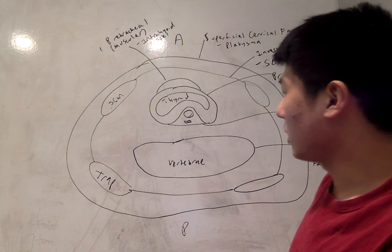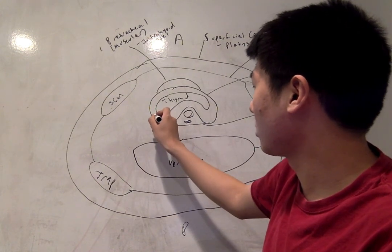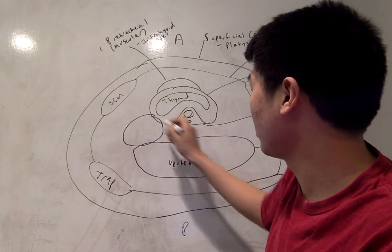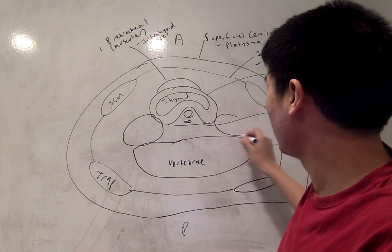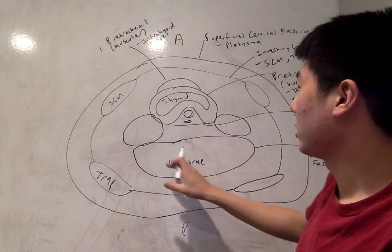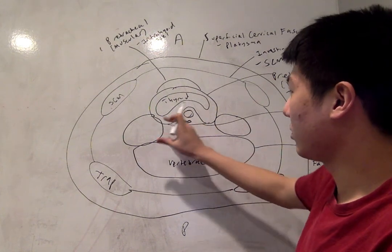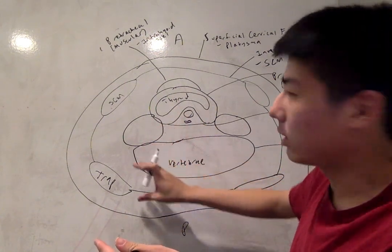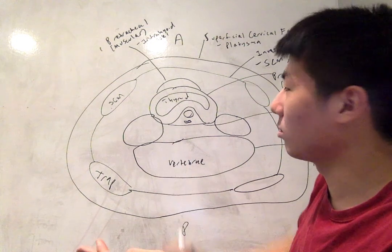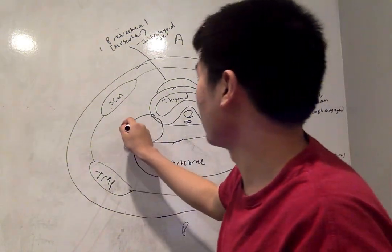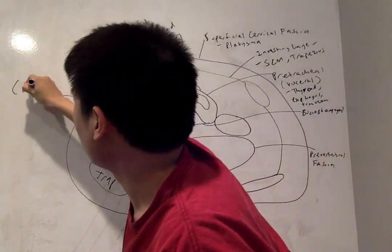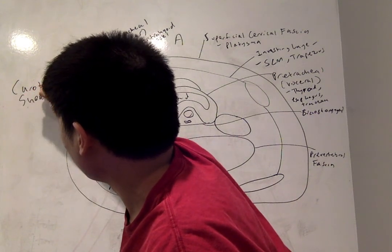Next, we're going to talk about the carotid sheet, which houses some very important vascular structures. So the carotid sheets actually connect the pre-tracheal and pre-vertebral fascia. They completely bridge and span these two compartments. We have one on each side.